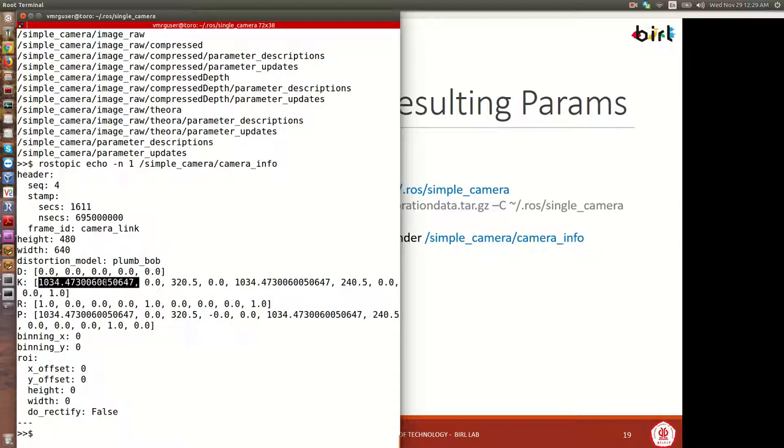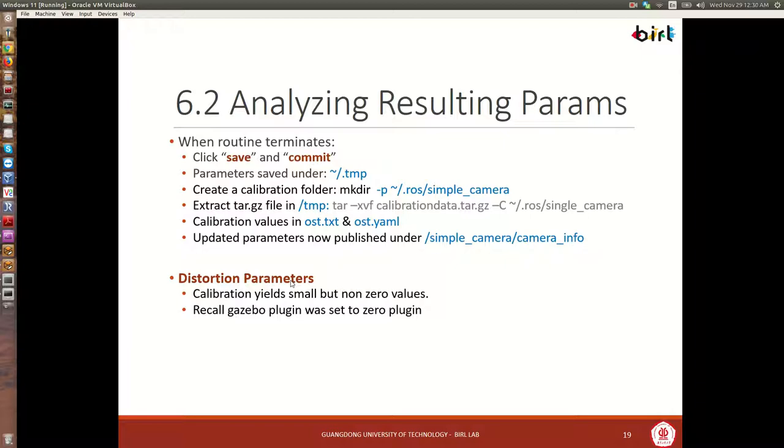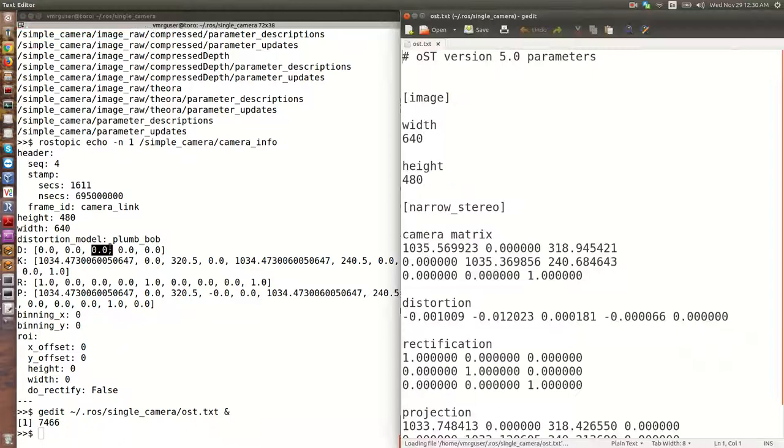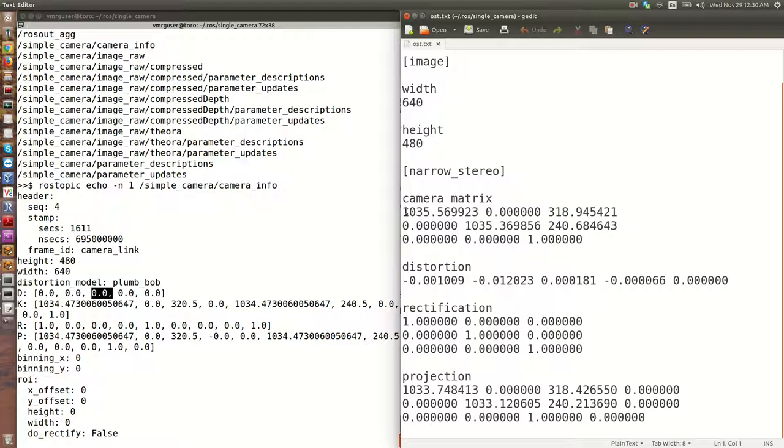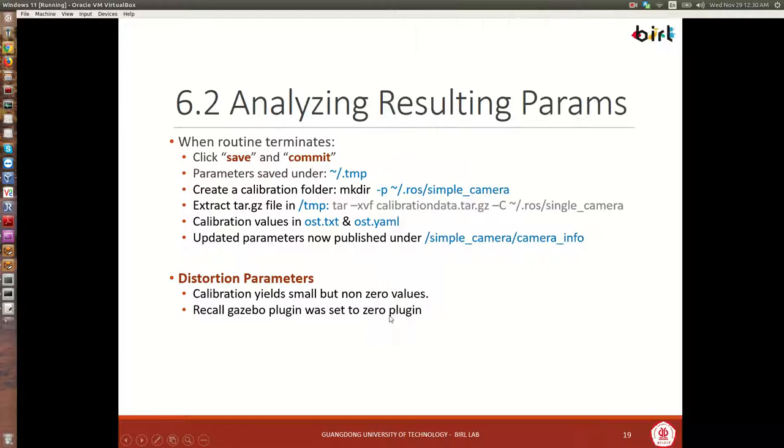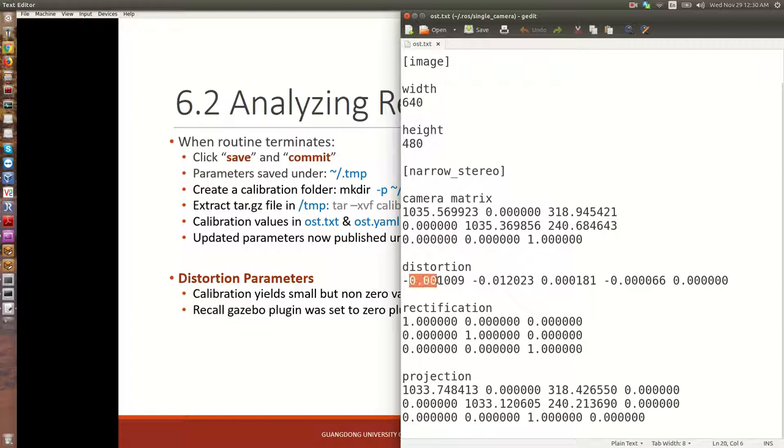Ross topic echo single camera camera info. Here they are. And so we'll see that these numbers are matching what we currently got. For let me see, the distortion numbers are not updated. Let's open the file that we have in our Ross folder. So for example, we could use to edit. Ross, single camera, OST. Let's see, let's use the dot text. Oh, my apologies. These numbers have not yet been updated. So that's a mistake. But let's analyze these numbers. As I had mentioned before.